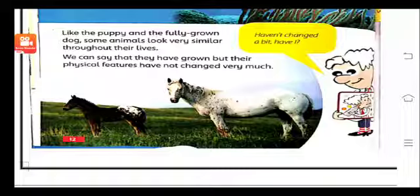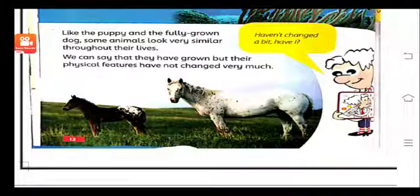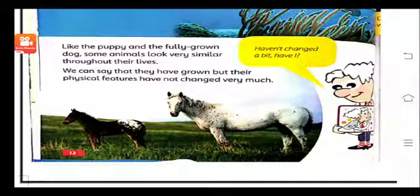Hum yeh keh sakte hain woh bade to ho rahe hain, lekin zahiri tor par unme koi tabdili nahi aayi. You can see in the picture there are two horses — a baby horse and a complete grown horse. You can see there is no change in their physical features; they grow big but their physical features do not change. So dear students, you have to learn the changes that occur in animal life — how they grow and change — and understand it carefully.